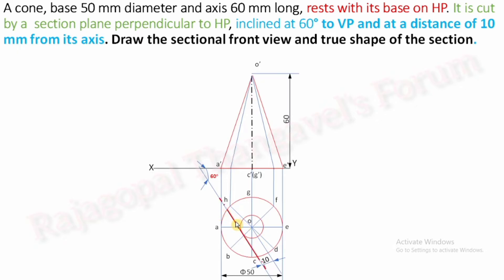Convert the 60-degree line into a section plane. The section plane representation is a continuous thick line followed by a dot and dash at both ends. This side is the removed portion of the solid, and this part is the remaining portion. Convert the remaining portion of the solid into continuous thick lines.